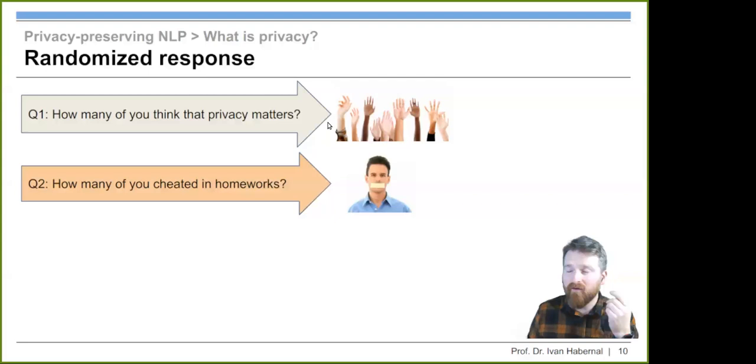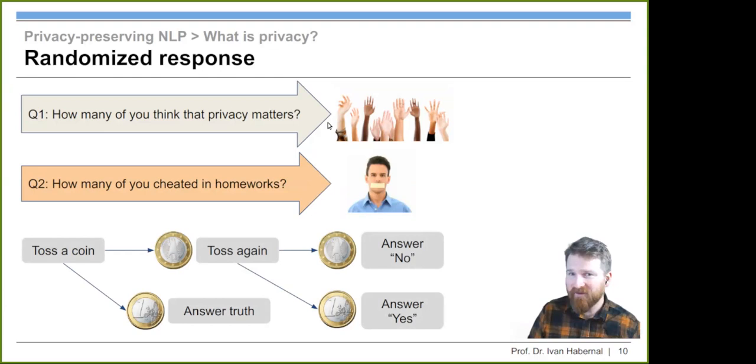But what if I'm really interested in asking this question, not who actually cheated, but on average, how many people out of my hundred students in my class? Is it 50%? Is it 20%? Is it everybody? I want to find this out and maybe there's a way. And this way includes coin flipping. We're not going to run this experiment here, but maybe if you happen to have a coin, you can try. The procedure goes like that. You take a coin, toss it.